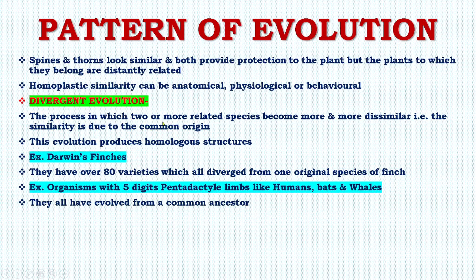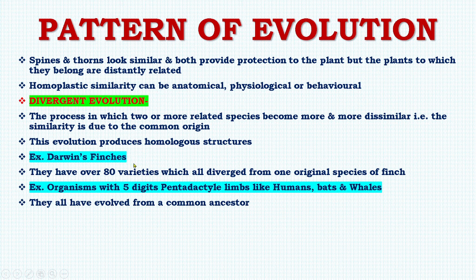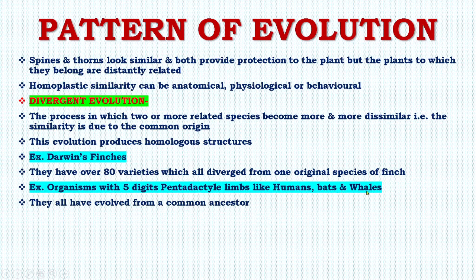Next is divergent evolution — the process in which two or more related species become more and more dissimilar, where the initial similarity is due to common origin. This evolution produces homologous structures. For example, Darwin's finches are a very classic example, with over 80 varieties all diversified from one original species. Another example is organisms with five-digit (pentadactyl) limbs, like humans, bats, and whales, which all evolved from a common ancestor.